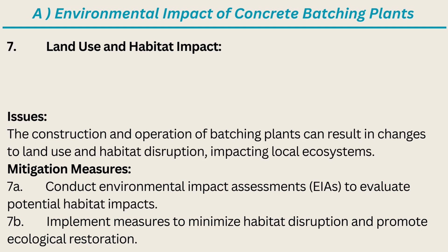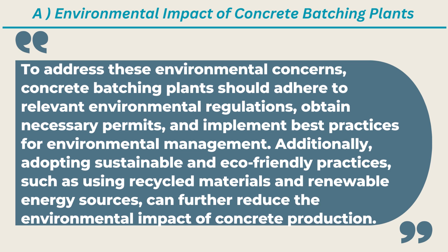7. Land Use and Habitat Impact. The construction and operation of batching plants can result in changes to land use and habitat disruption, impacting local ecosystems. Mitigation Measures: A. Conduct environmental impact assessments. B. Implement measures to minimize habitat disruption and promote ecological restoration.